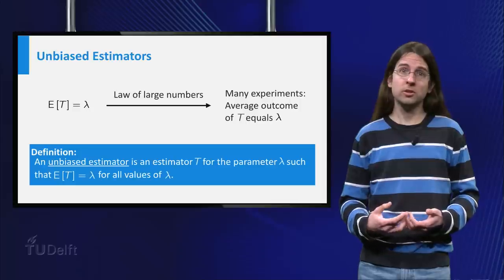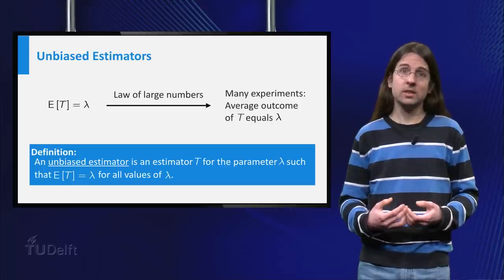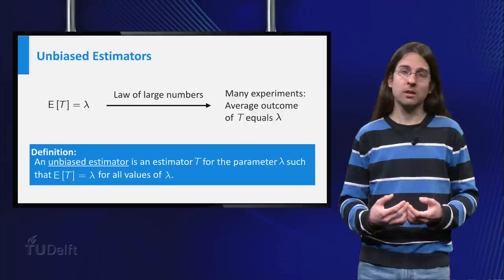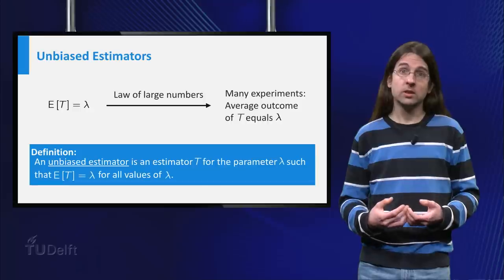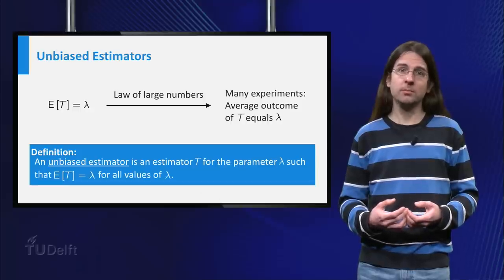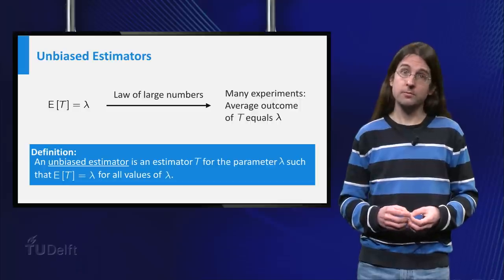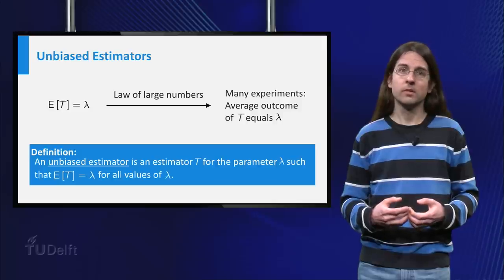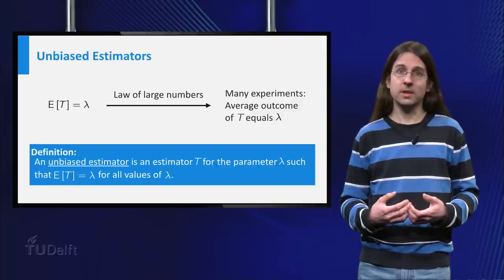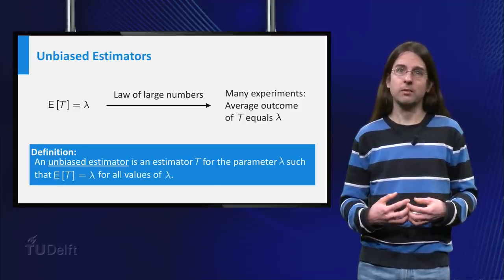Suppose you draw from a distribution depending on the parameter lambda. An unbiased estimator for this parameter lambda is an estimator t such that the expectation of t equals lambda for all values of lambda. Notice that for each value of the parameter lambda, the distribution of the outcomes and thus of t is different. So the expectation of the estimator t varies as well. The definition of an unbiased estimator tells you a bit of how you want this distribution of the estimator to vary with lambda.